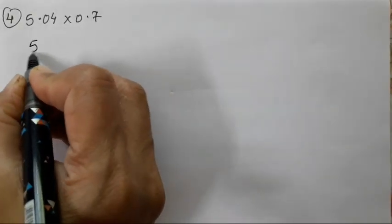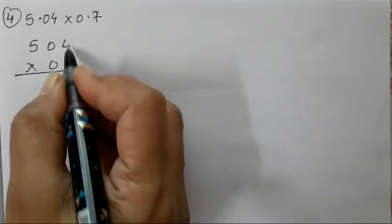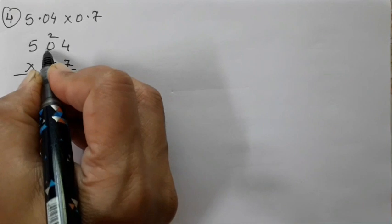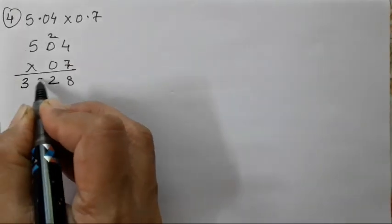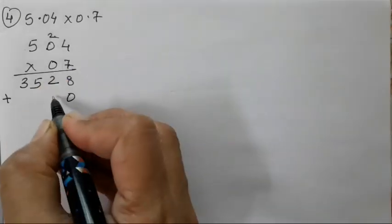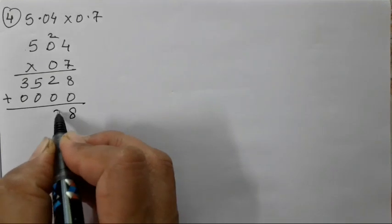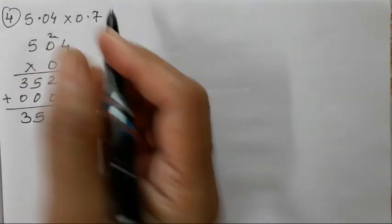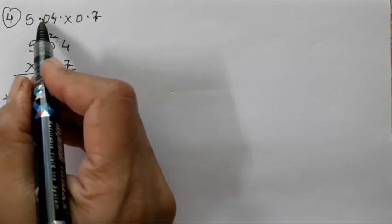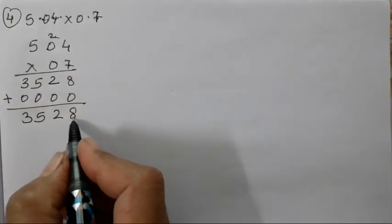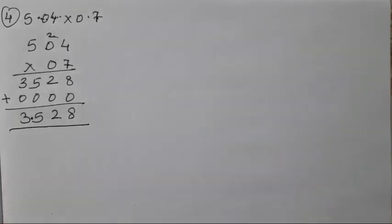Next sum. Write it without a decimal point first and multiply: 4 sevens are 28, 7 zeros are 0, 7 fives are 35, then the second row — zeros multiplied give zeros. Result is 8253 approximately. Now add the decimal point: 1 digit from the first number after the decimal, 2 digits from the second. So 1 plus 2 equals 3. Count 1, 2, 3 from the right — your decimal point will be added there.